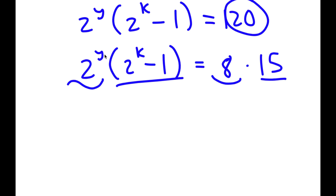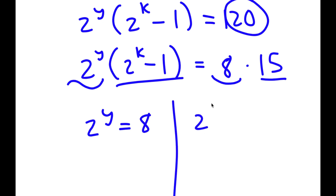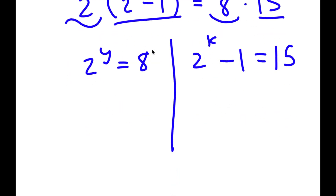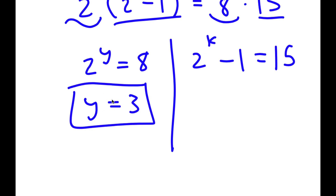So I have 2 to the power of y is equal to 8, and 2 to the power of k minus 1 is equal to 15. For 2 to the power of y equals 8, y is going to equal 3, because 2 to the power of 3 is 8. So that's our solution for y.